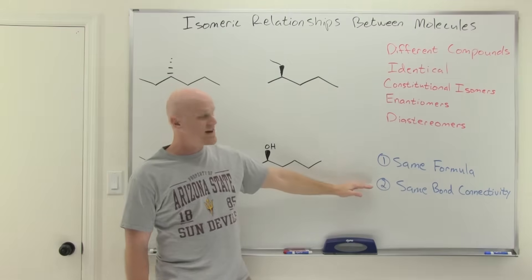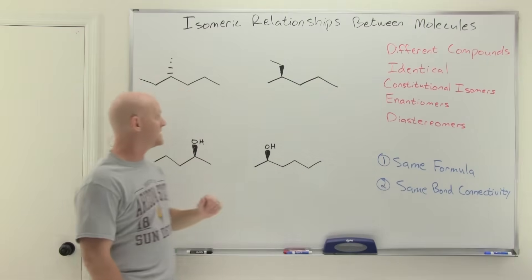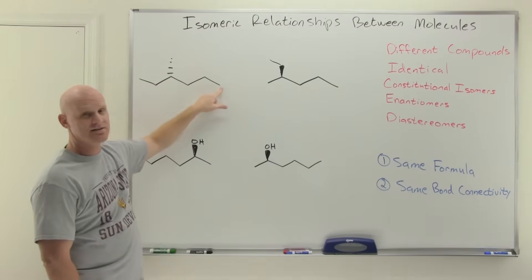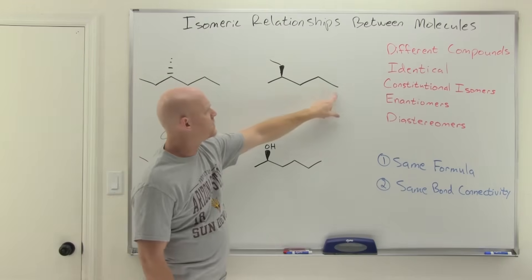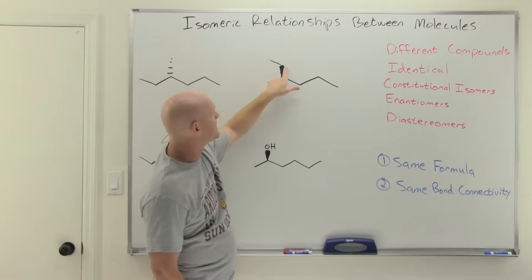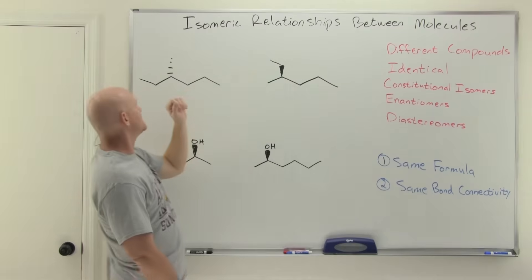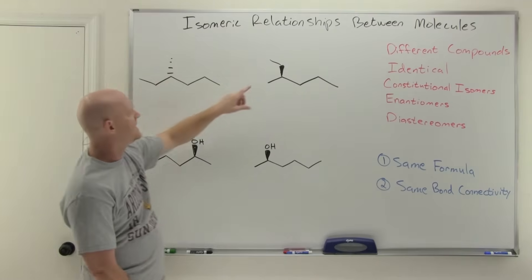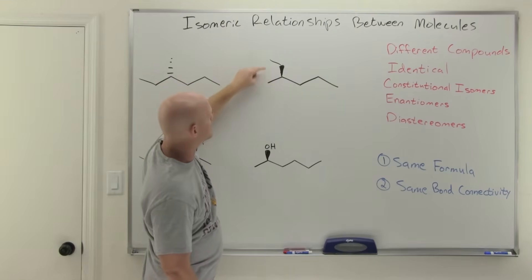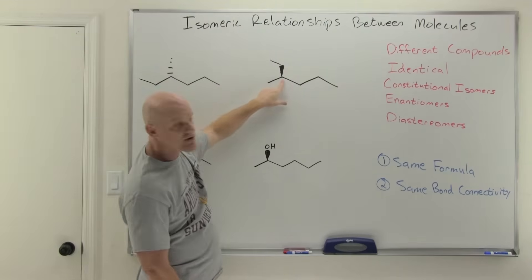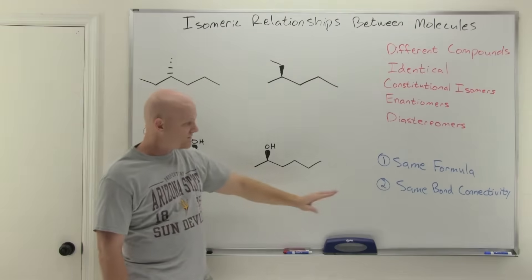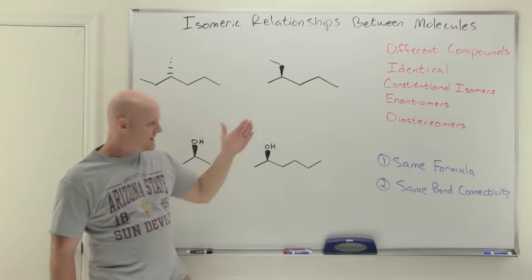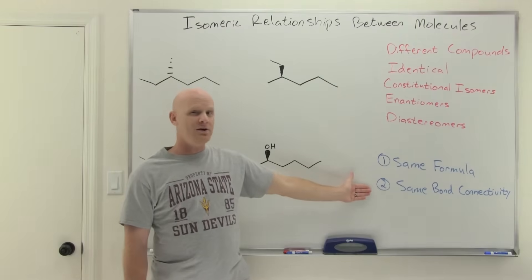The next question is: do they have the same bond connectivity? Finding the longest chain gives six carbons in both cases, with a methyl group attached to the third carbon from one end. So these are both some form of 3-methylhexane, and therefore they have the same bond connectivity.